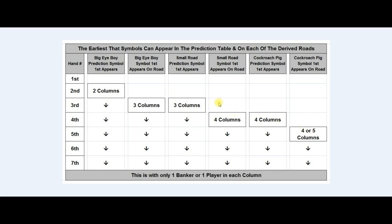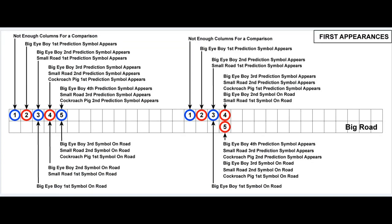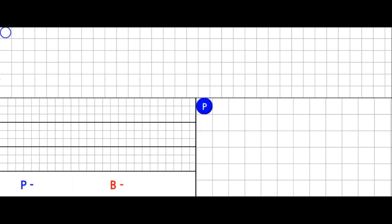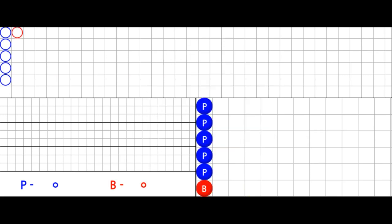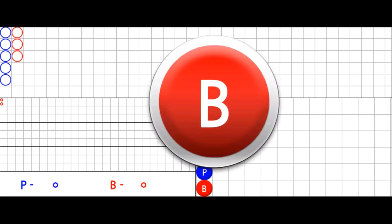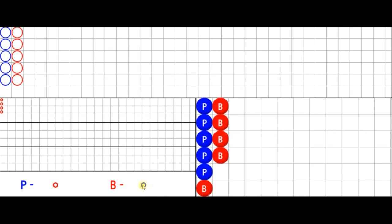Here's an easier way to understand it. If you have a bunch of hands only occupying one column, you won't get any prediction symbols at all. As soon as you have two columns in use, you can generate the big eye boy prediction symbol. Even if many more hands occur, if you're still only in two columns you won't generate prediction symbols for the other two roads yet.